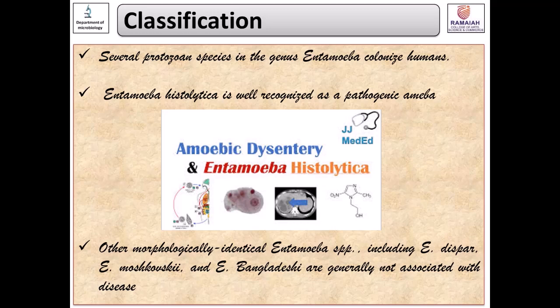Looking at the classification, this organism belongs to the genus Entamoeba, which has many other species that colonize humans apart from histolytica, but not all are associated with disease. Among all of these, only Entamoeba histolytica is well recognized as a pathogenic amoeba associated with both intestinal and extra-intestinal infections. Other morphologically identical Entamoeba species include E. dispar, E. moshkovskii, and E. bangladeshi.